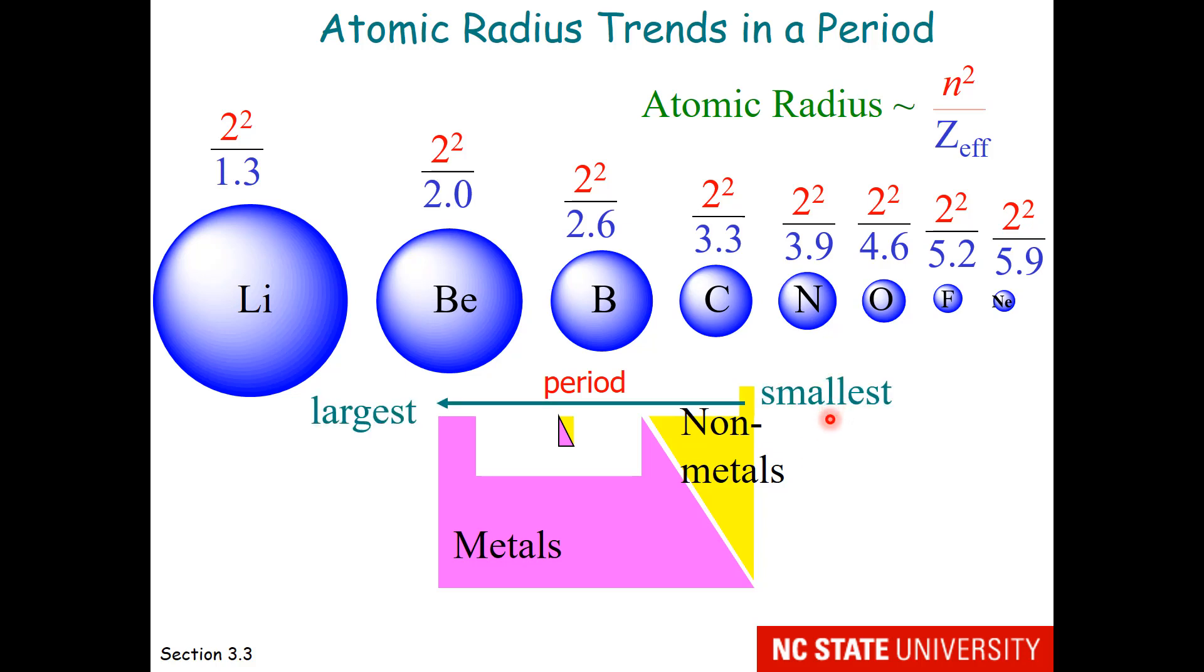So smaller atoms are on the right side of the periodic table, and larger atoms are on the left side of the periodic table.